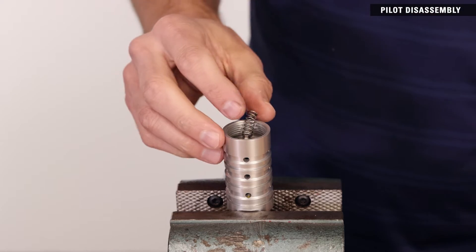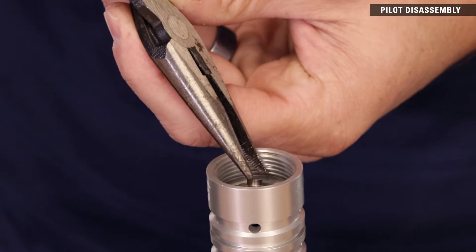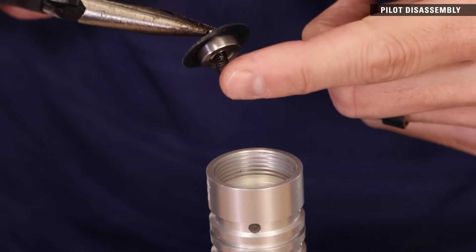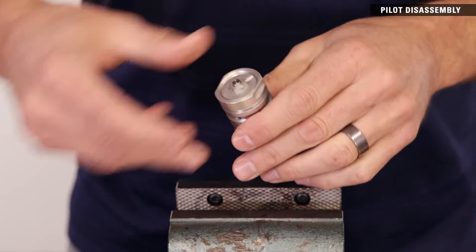Remove and discard the spring. Use pliers to remove and discard the upper diaphragm assembly and the conical spring. Turn the pilot assembly over to remove and discard the pilot plug.